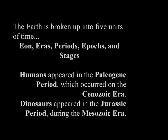Humans appeared in the Paleogene period, which occurred in the Cenozoic era. Dinosaurs appeared in the Jurassic period during the Mesozoic era.